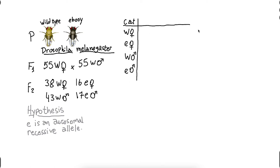So I'm making here my chi-square table. First, I'm going to put the categories. I have wild type female, ebony female, wild type male, ebony male. Then, I'm going to put the observed values, the ones that I actually got from the crossing.